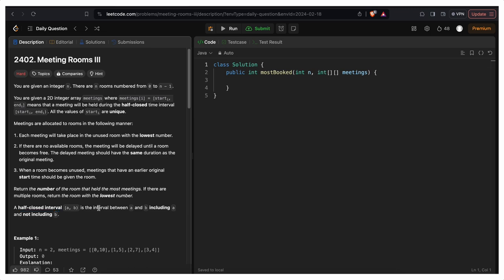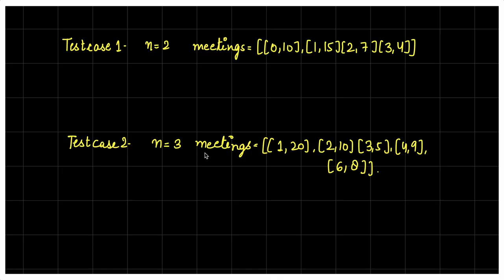Return the number of the room that held the most meetings. If there are multiple rooms, return the room with the lowest number. A half-closed interval a to b is the interval between a and b, including a but not including b. Basically, we want to know the room that held the most meetings. I'll attach the link in the description box for Meeting Room 2, so go through that video and then come back. Also subscribe to our channel if you haven't yet.